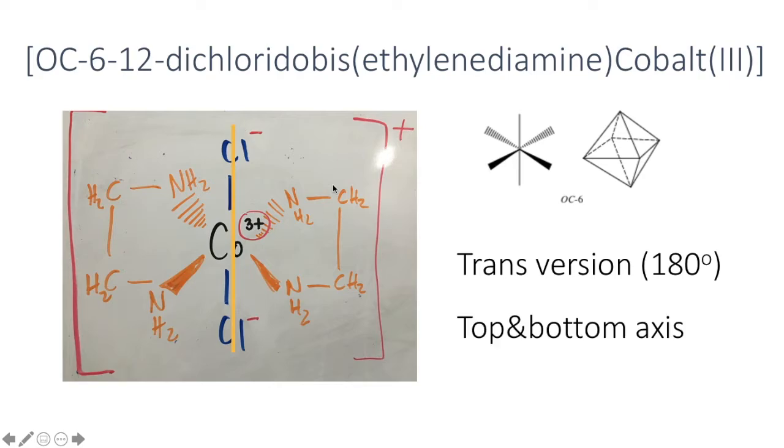In this trans isomer, the chlorines are across from one another which also determines the top and bottom axis. The naming is first the number across from the top priority. Since both chlorines are 1, then 1 is the first number. The second number is the number across the equatorial smallest priority. In this case all hold the same value of 2, and this is how you obtain the 1,2 in the trans complex name.